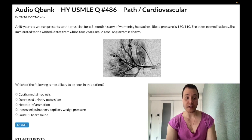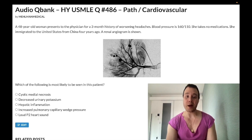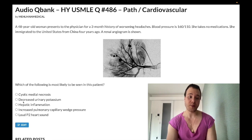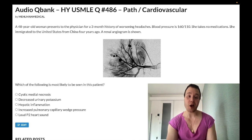Answer choice B is decreased urinary potassium — wrong answer. Even if you don't know what's going on in this image, since there is some pathology with the renal arteries, we can infer there would be an increase in RAAS. That's why this patient has high blood pressure. If the renal angiotensin-aldosterone system is upregulated, aldosterone induces secretion of potassium distally in the kidney at the cortical collecting duct, which would increase urinary potassium — not decrease it.